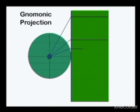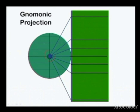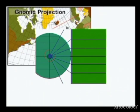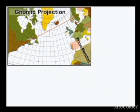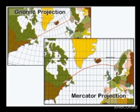In a gnomonic projection, the light source is at the center of the earth, projected directly to a flat surface. A gnomonic projection produces a gnomonic chart. In a gnomonic chart, a great circle is a straight line. When you transfer it to a Mercator chart, it becomes a curved line. Whereas in a Mercator projection, a great circle appears as a curved line.